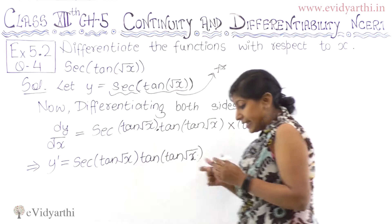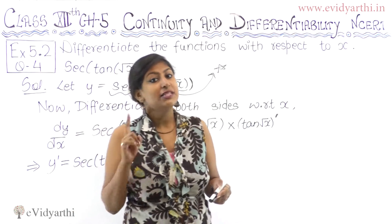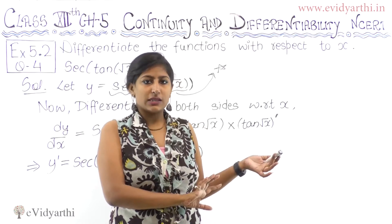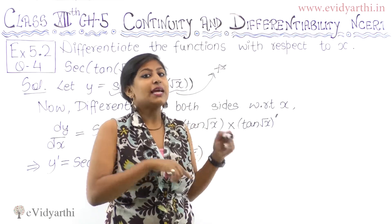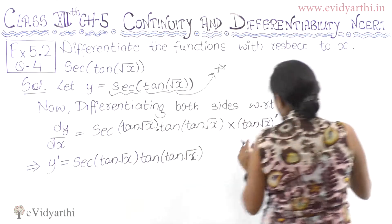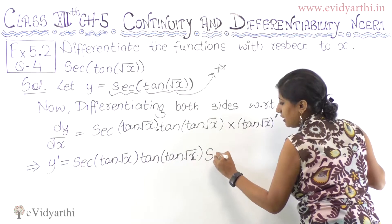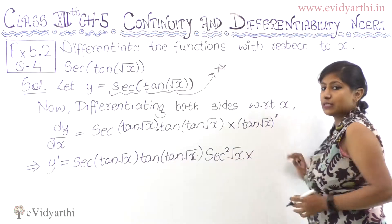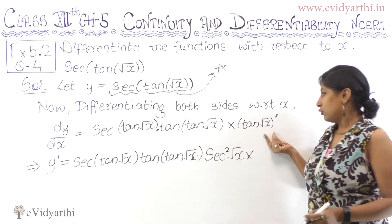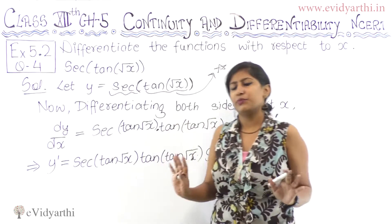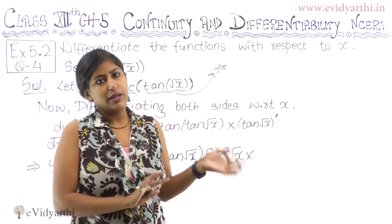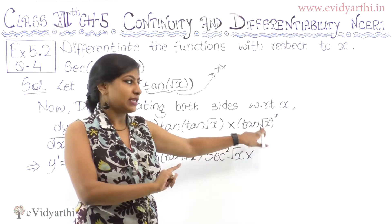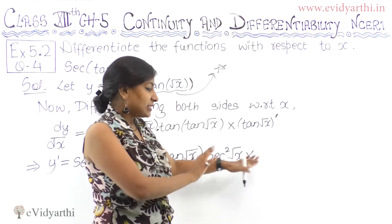Multiply by the derivative of tan(√x). The derivative of tan of something is sec squared of something. Just as the derivative of tan x is sec² x, the derivative of tan(√x) is sec² (√x). So we write sec² (root x). But wait, the story has a twist — it's not just x inside, it's root x. So we write sec²(root x) into the derivative of root x.